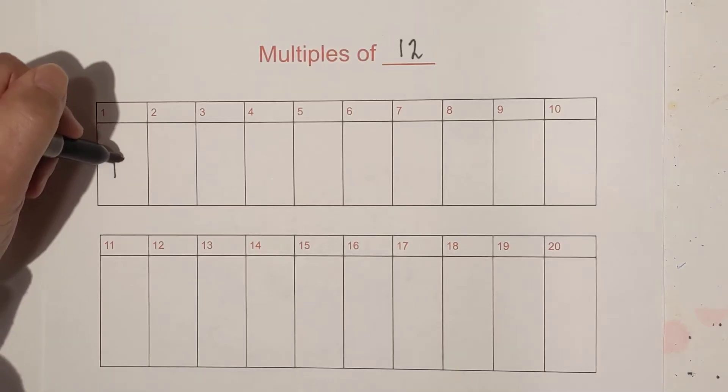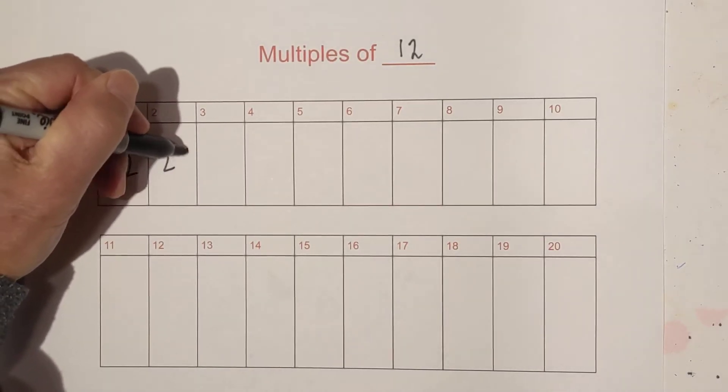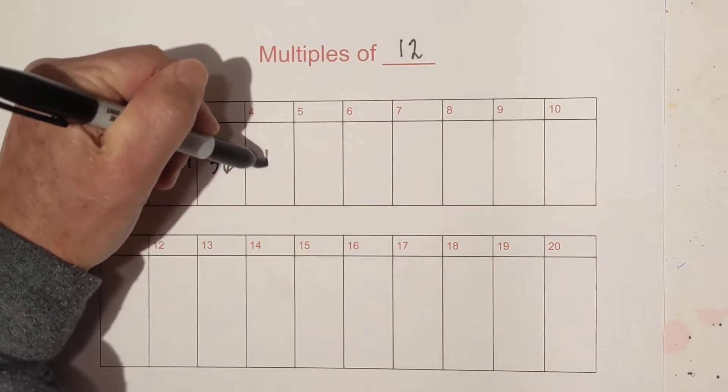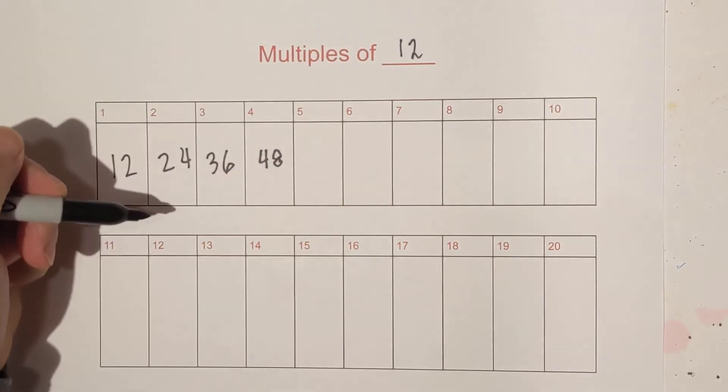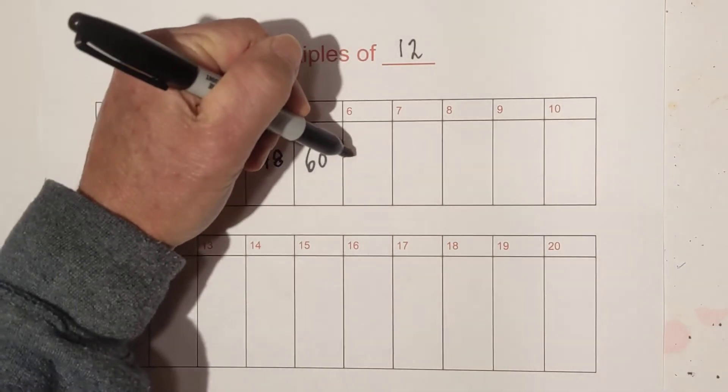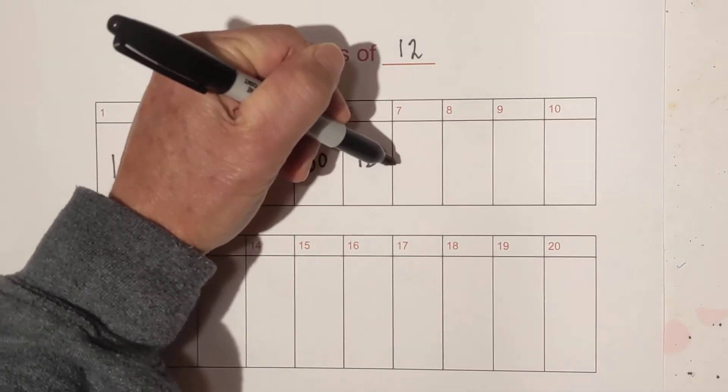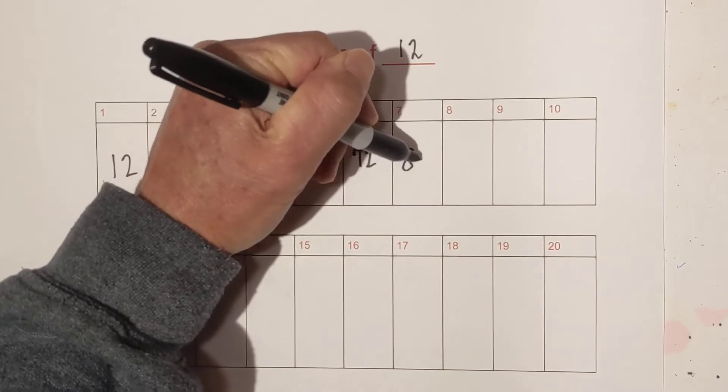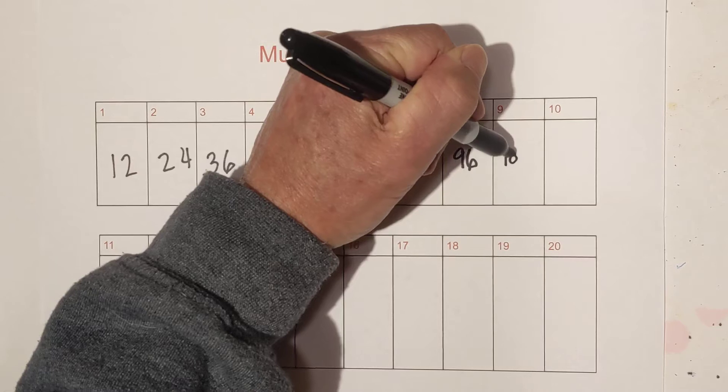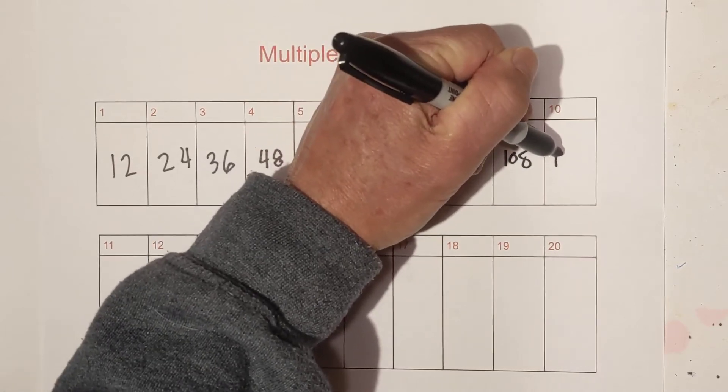So we have 1 times 12 is 12, then we go 24, 36, 4 times 12 is 48, then we have 5 times 12 is 60, then we go 72, 84, 96, 108, and then 120.